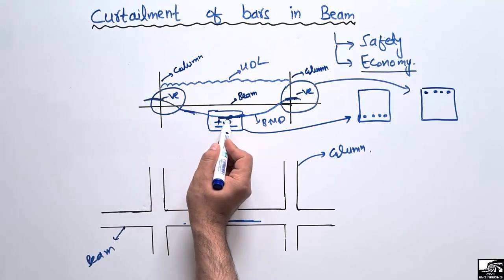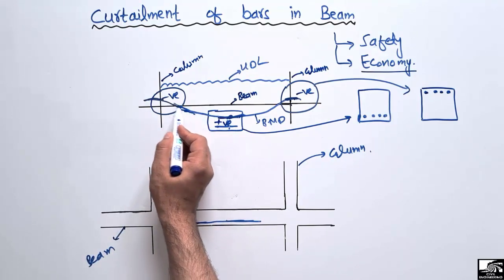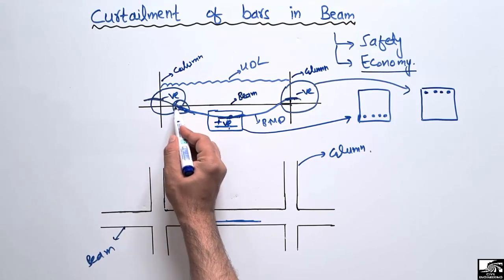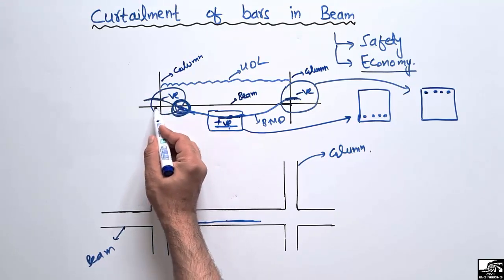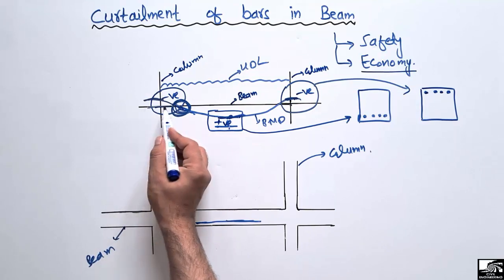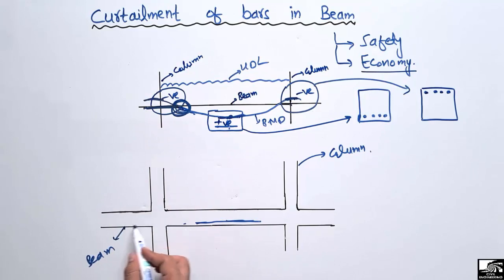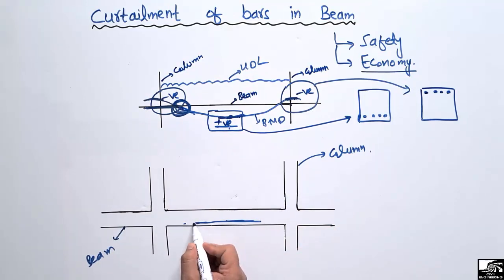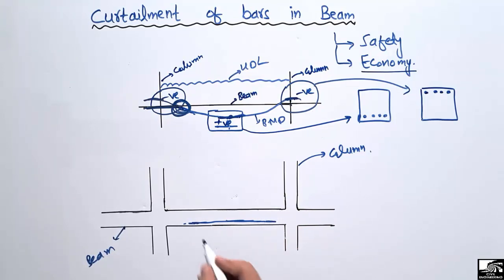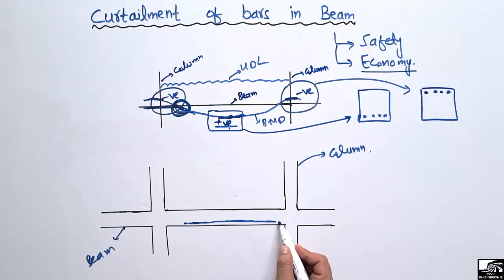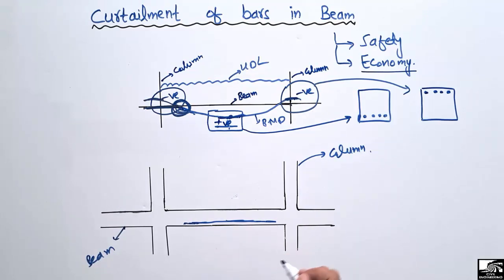The positive bending moment decreases and reaches zero near the column. So we don't need the positive bending moment reinforcement at that portion of the beam — there is negative bending moment there instead. We don't need the reinforcement bar to pass through that section, so what we do is cut the bars up to a certain limit and not allow the longitudinal steel bar to go into the column section. This is known as the curtailment of bars in the beam section.